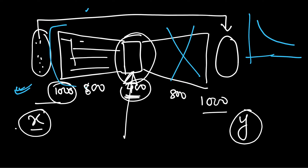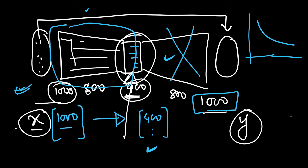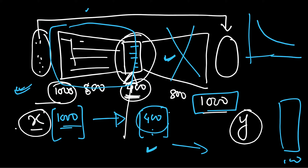We will take the encoder part. Whenever we give data of a thousand dimensions, the encoder will return data of 400 dimensions, which will essentially contain almost the same information — some information will be lost, but it will contain most of the information. If we want to transmit the data, we can transmit just the 400-dimensional data, and somebody who receives it over a network can use the trained decoder. This decoder will take the 400-dimensional input and return a thousand-dimensional output. So we are representing a thousand-dimensional data as a 400-dimensional data.